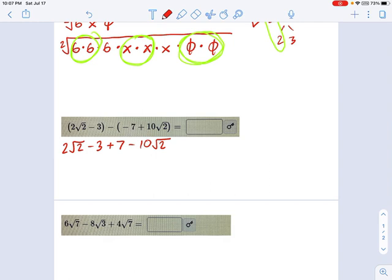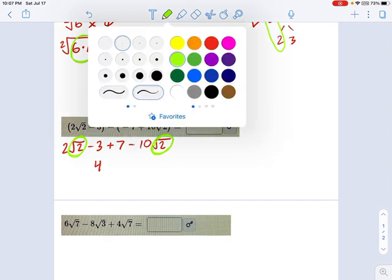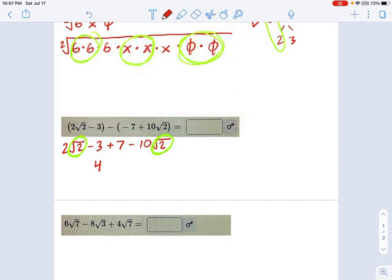Negative 3 plus 7 is 4. And 2 root 2 minus 10 root 2. How many root 2's are there? You can treat root 2 kind of like it's a variable. There's one variable, there's another of its kind. So we're going to say this is 2 minus 10, that's a total of minus 8 root 2's. So 4 minus 8 root 2.